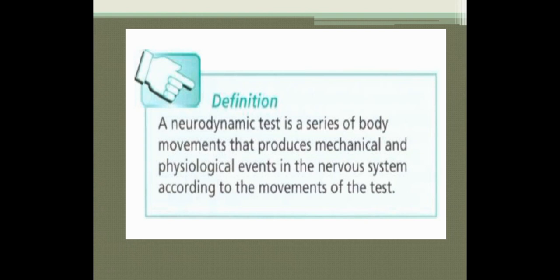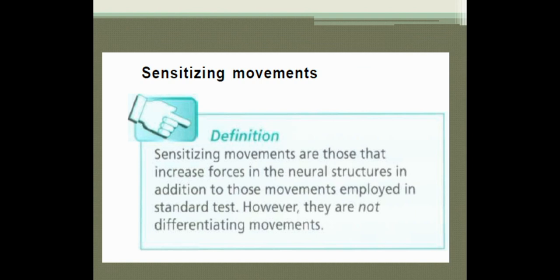While stretching the nerve during the test, if the patient experiences signs and symptoms of tingling, numbness, or the same pain they otherwise experience is reproduced, then the test is considered positive. Sensitizing movements are defined as movements that increase the forces in the neural structures in addition to those employed in the standard test. For example, cervical flexion or ankle dorsiflexion — if these movements increase the force in the neural structure and put additional stress on it, this kind of movement is called a sensitizing movement.